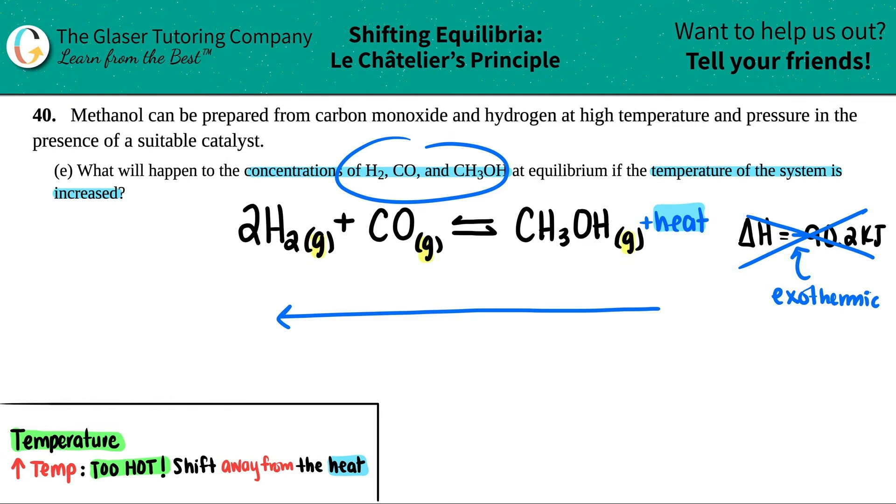So what's going to happen to these three? Well if I'm going towards the reactants, H₂ is going to increase, CO is going to increase. And what's going to happen to the methanol? Yeah, it's going to go down. And that's the answer.